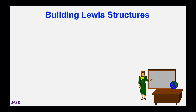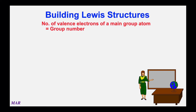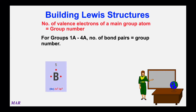What we're trying to do is figure out where electrons are placed in molecules and then make predictions from there. First thing to remember is that the number of valence electrons is equal to the group number — you have to use the American version of the periodic table. Another rule of thumb: groups 1A through 4A will have a number of bonding pairs equal to their group number by default.